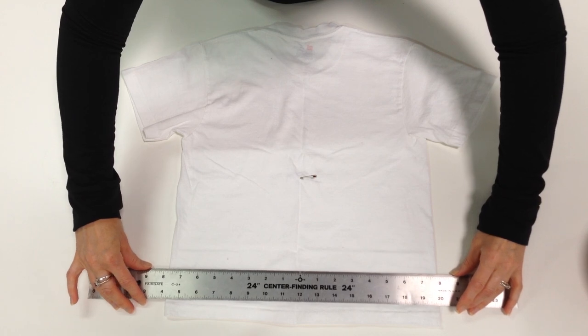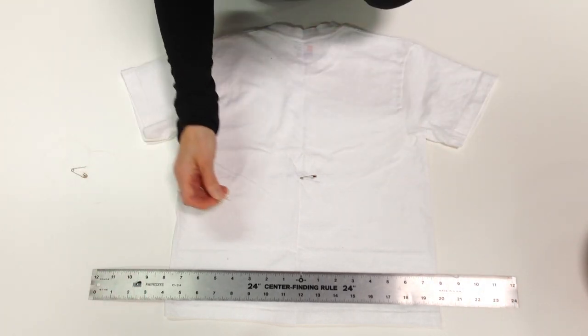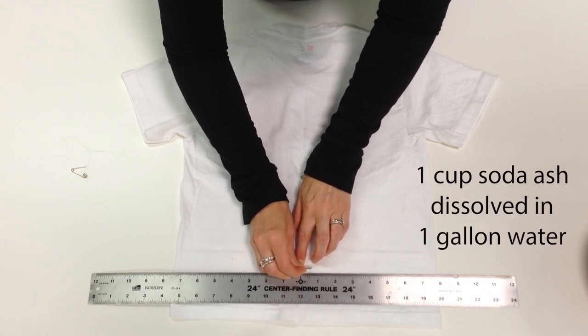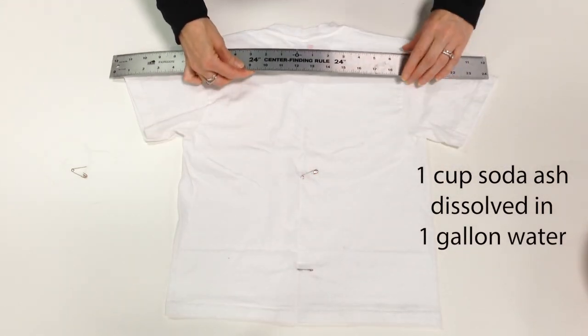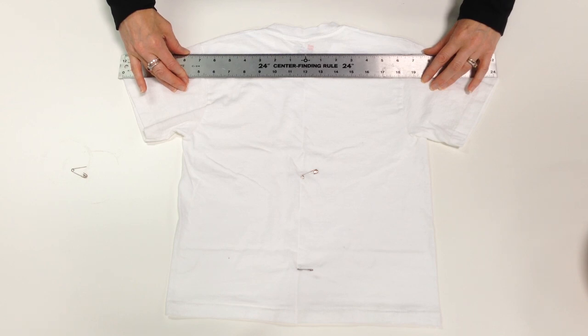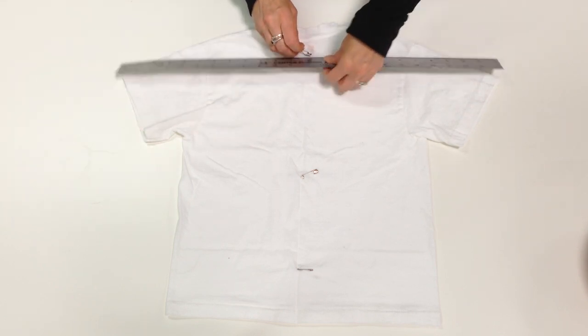Once I have it all pinned up, I'm going to soak the t-shirt in a soda ash solution for about 10 minutes. The soda ash will help get the shirt ready to accept the dye and have that be permanent.